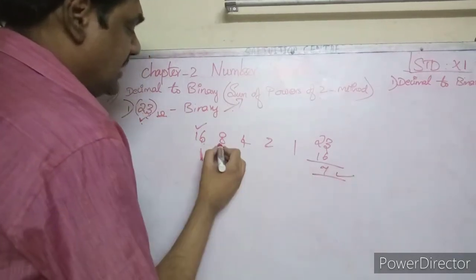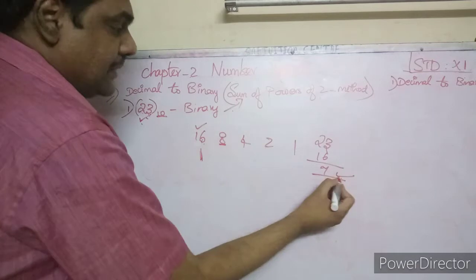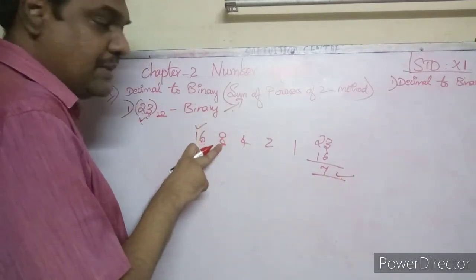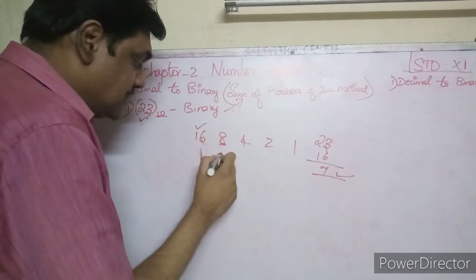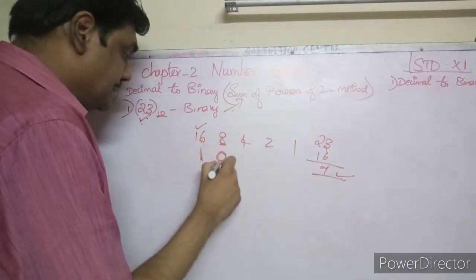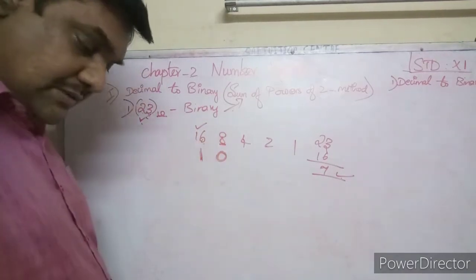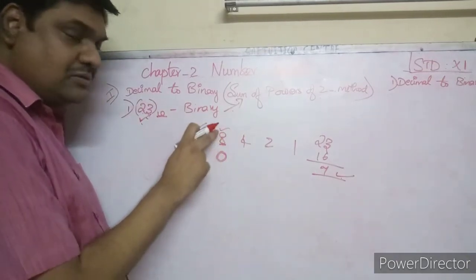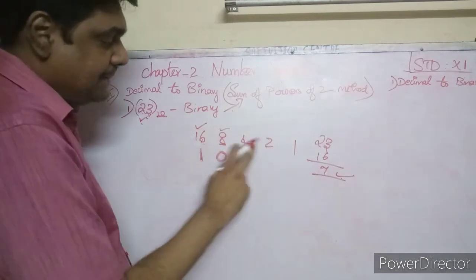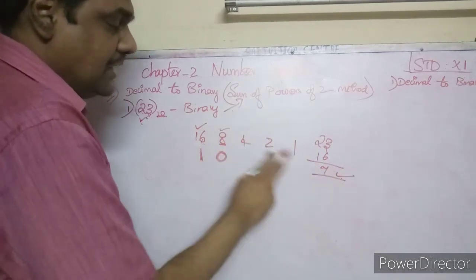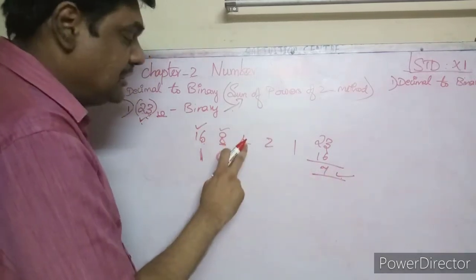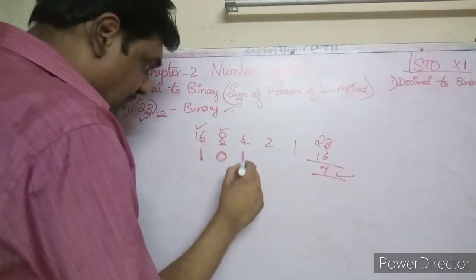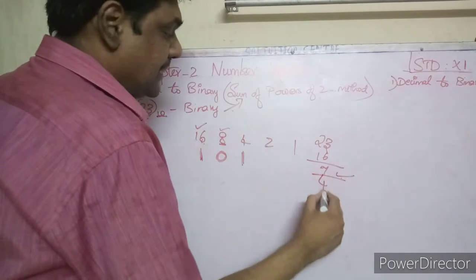Now compare 7 with 8. Since 8 is greater than 7, put a 0. Next, compare 7 with 4. Since 7 is greater than 4, put a 1. Then subtract 4 from 7, which gives us 3.